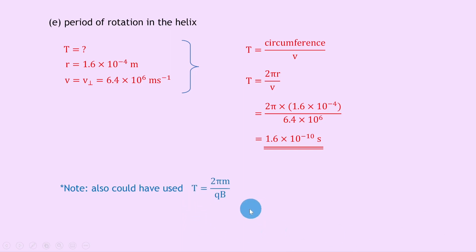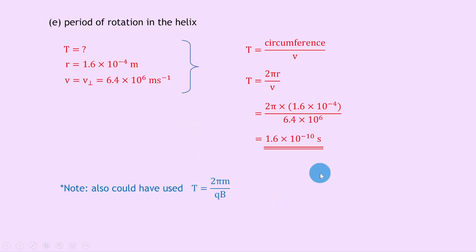Note we could also have used the derived expression t equals 2 pi m over qb, derived from equating omega equals v over r with the two force expressions f equals qvb and f equals mv squared over r, and using t equals 1 over f. Using that expression with the values from this question should give the same answer.